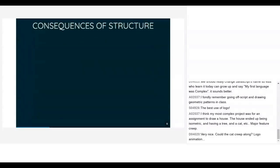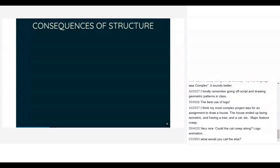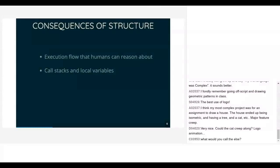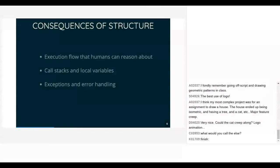Getting rid of GOTO didn't just give us nice execution flow that humans can reason about — it did a whole lot more. It let us have call stacks and local variables in our functions. The reason for that is that GOTO doesn't just jump around inside a function — it can jump to anywhere in the code, from the middle of one function to the middle of a completely different function. If you can do that, you can't rely on local variables because your call stack doesn't make sense anymore.